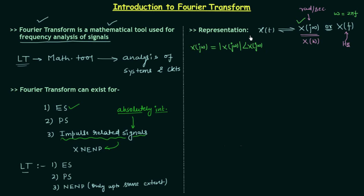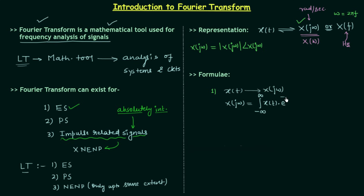This is all for the representation of Fourier transform, and now we move to the formula. The first formula transforms the time domain signal x(t) to the frequency domain signal X(jω). The formula is: X(jω) = integral from minus infinity to infinity of x(t) multiplied by e^(−jωt) dt. This formula is known as the Fourier transform.